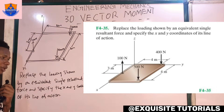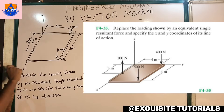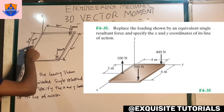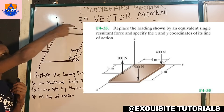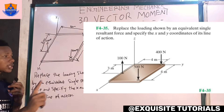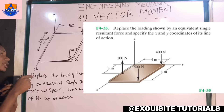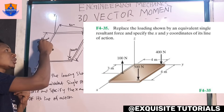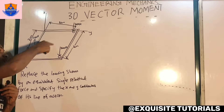The question says: replace the load shown by an equivalent single resultant force and specify the x and y coordinates of its line of action. We're having forces 400 newtons, 500 newtons and 100 newtons acting on this plane, with z, y and x dimensions. We want to replace them with just a single force that produces the same effect, and specify the distance of that force from the y-axis and x-axis.